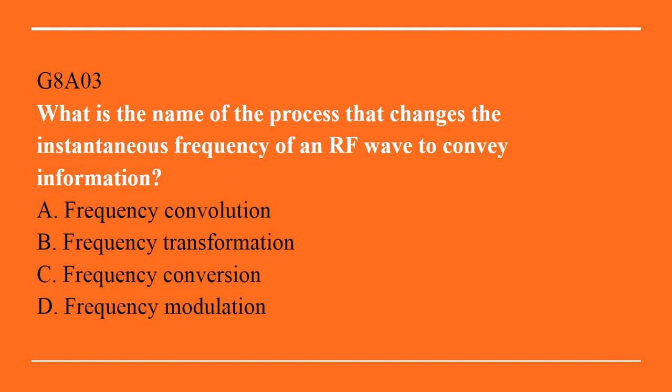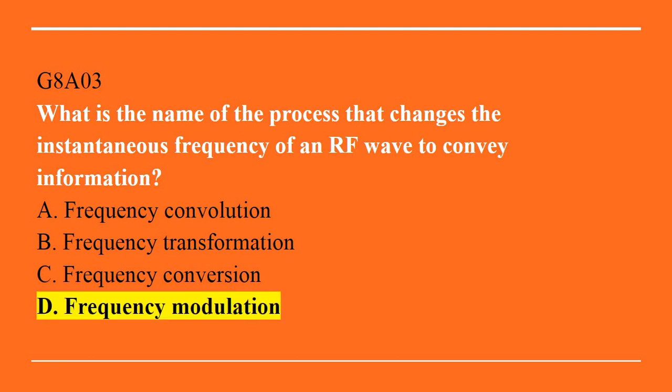G8A03: What is the name of the process that changes the instantaneous frequency of an RF wave to convey information? A. Frequency convolution. B. Frequency transformation. C. Frequency conversion. D. Frequency modulation. Answer is D. Frequency modulation.